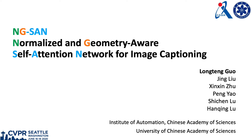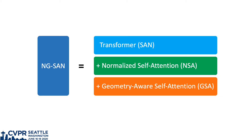We introduce NGSA-N, Normalized and Geometry-Aware Self-Attention Network for image captioning. NGSA-N is based on the transformer and makes two improvements on self-attention: one is normalized self-attention, and the other is geometry-aware self-attention.